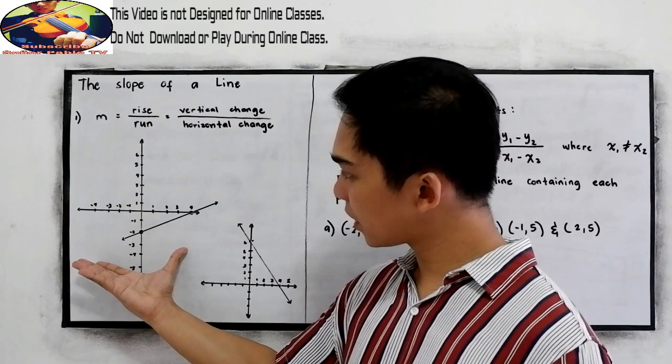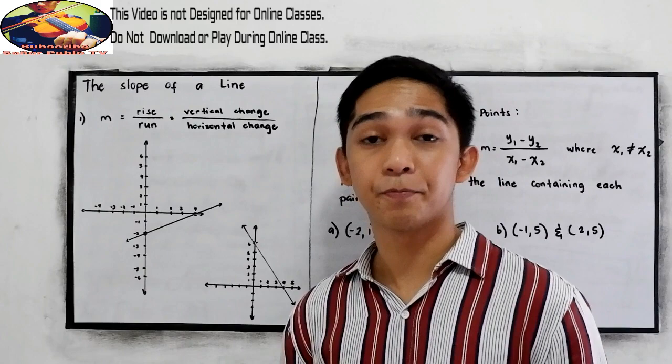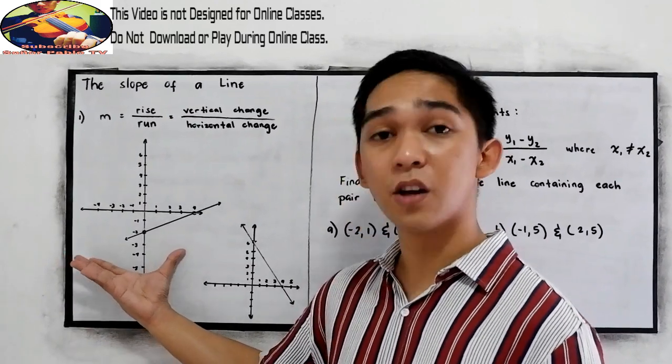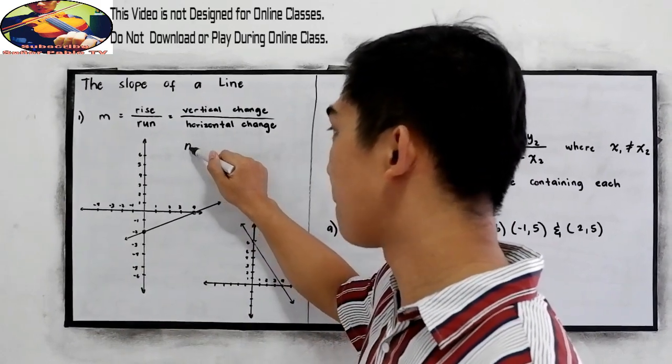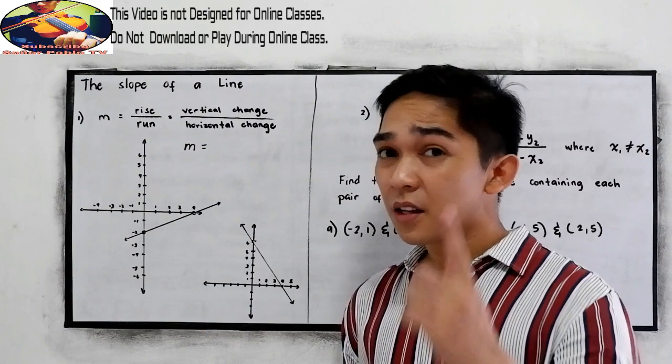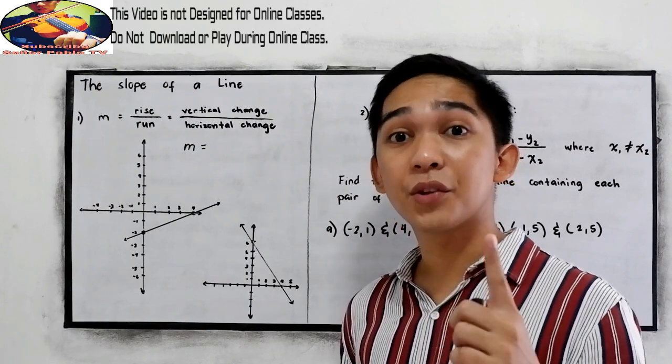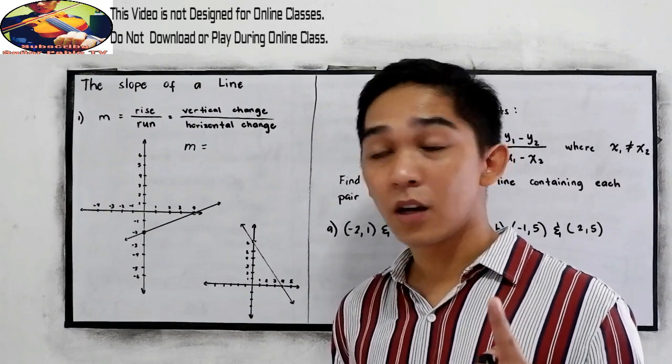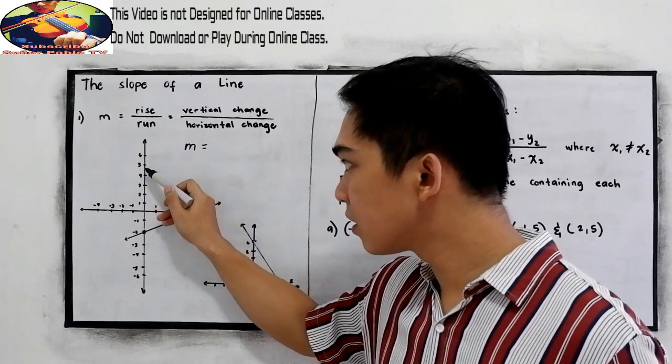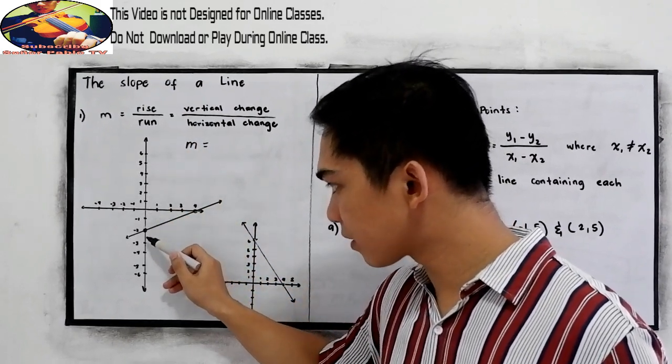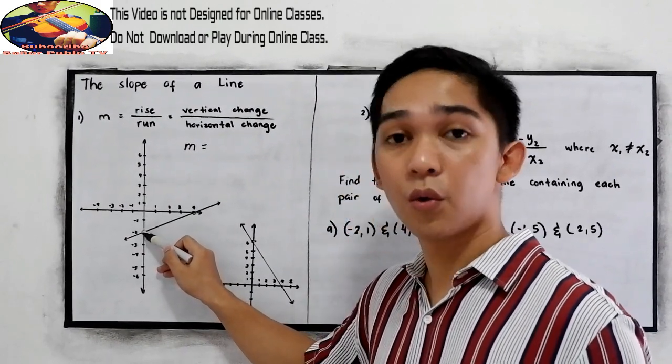We have here a rectangular coordinate system with our straight line. Now we're going to find the slope using the graph. The shortcut is first locate the y-intercept. Check our y-axis, then where it touches the point. It's here. This will be our y-intercept.